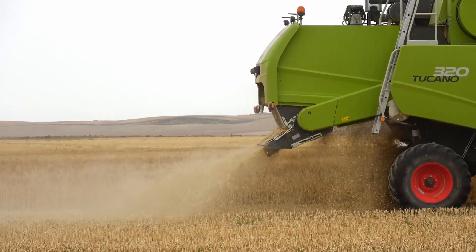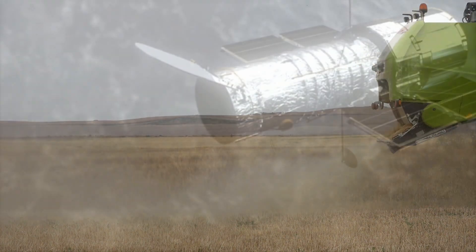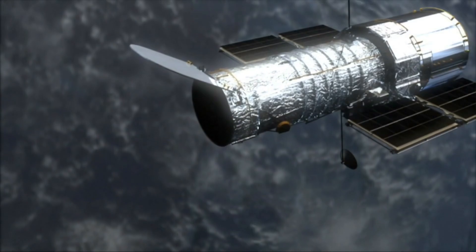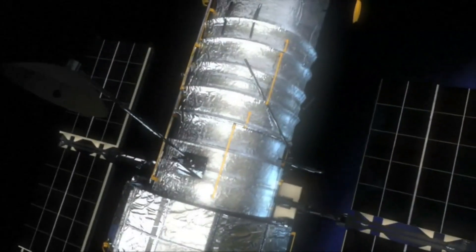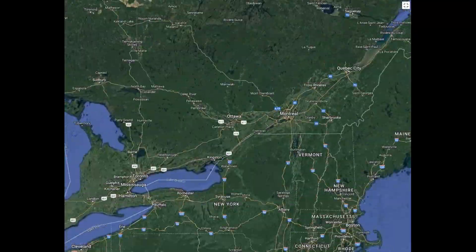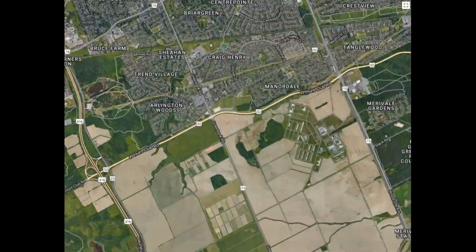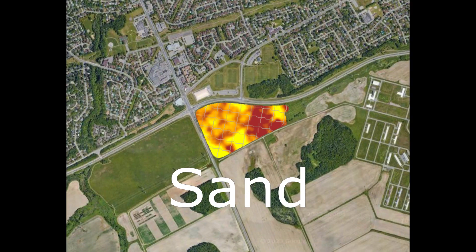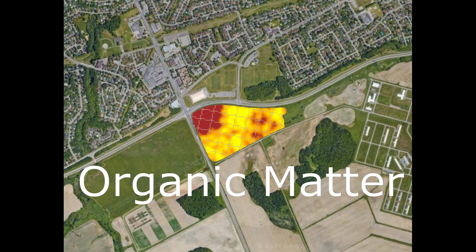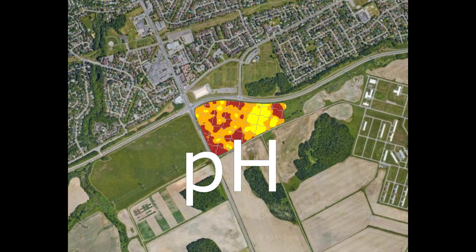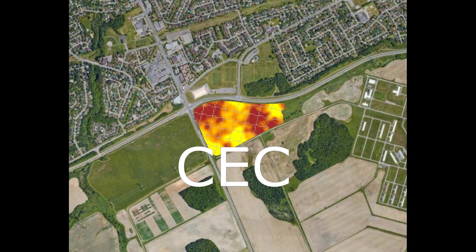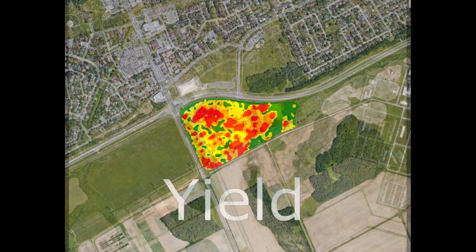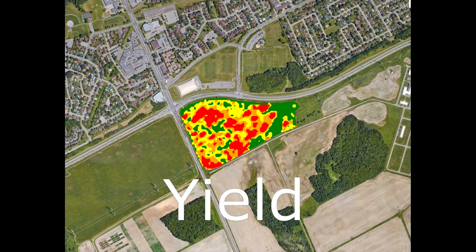Let's get technical and examine what's happening behind making a yield map from satellite images. Let's examine a corn farm in Ontario, Canada, where we know the soil properties from tests. As a matter of fact, you can hardly find a strong correlation between any single soil property and yield, because yield is the cumulative outcome from all those factors.